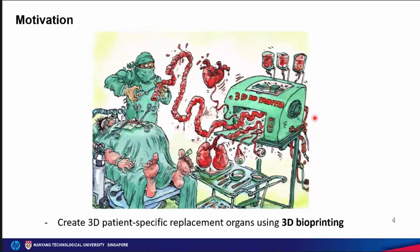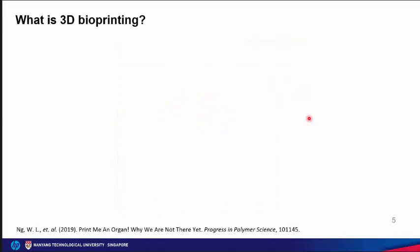Recipients with successful organ transplantation are usually subjected to constant immunosuppression to prevent acute or chronic graft rejection. This problem could potentially be solved by using autologous cells derived from a patient's own cells to create a 3D patient-specific replacement organ using 3D bioprinting, which would minimize the risk of organ rejection and eliminate the need for lifelong immunosuppression.